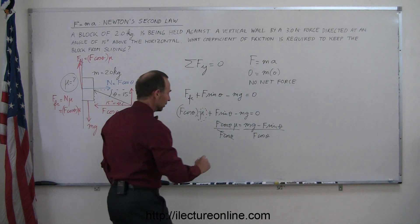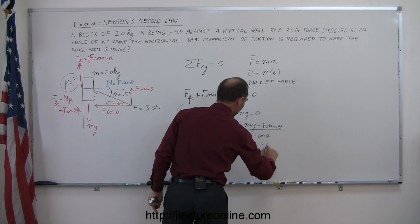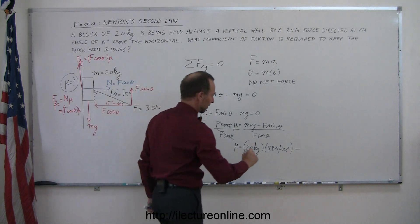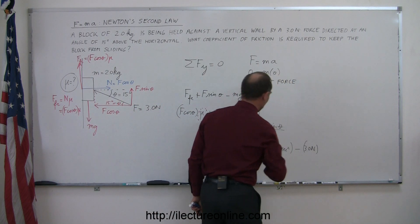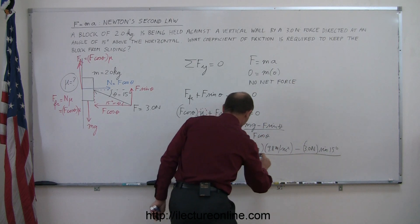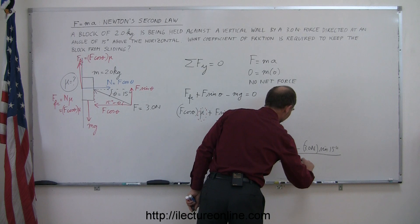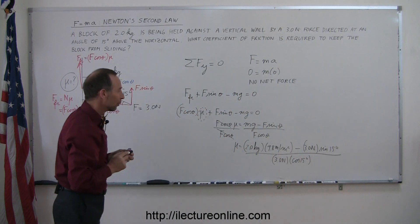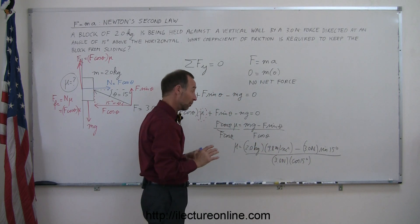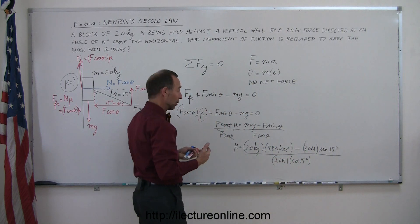Now we plug in the values. Mu equals the mass (2 kg) times g (9.8 m/s²), minus f (3 Newtons) times sine of 15 degrees, all divided by f (3 Newtons) times cosine of 15 degrees. Checking units: kilograms times meters per second squared gives Newtons, so the units cancel out, confirming that mu is unitless, which is what we expect.